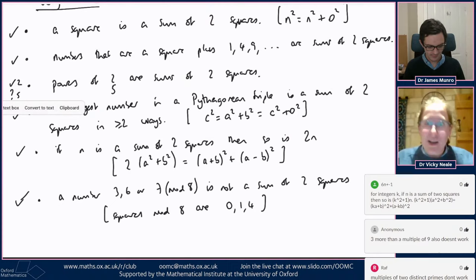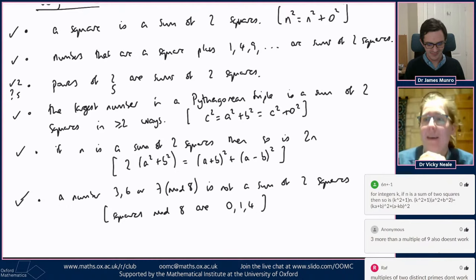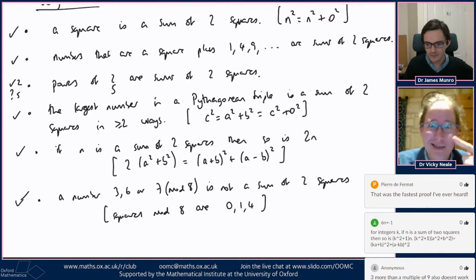This doesn't completely answer the question, because there are still numbers that are zero, one, two, four, or five more than a multiple of eight — some of those are sums of two squares and some aren't. Discussion going on about numbers that don't work: maybe they're primes, something about multiples of three, multiples of seven. But James points out that seven squared is a multiple of seven and that is a sum of two squares. There's discussion about powers of five as an induction argument.